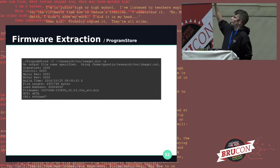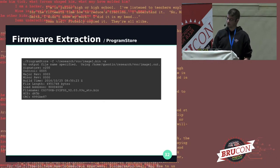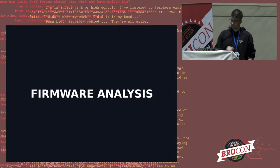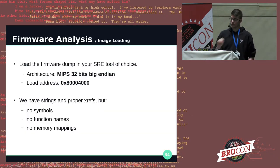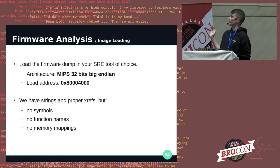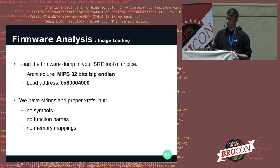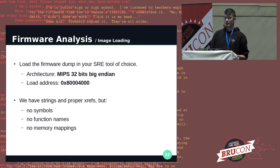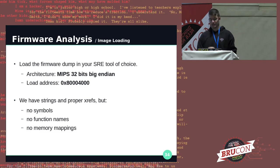You see the different header fields being printed out, and the actual binary is written to an output file. Now that we have our firmware image, it's time to analyze it. We can load it in Ghidra as a MIPS 32 big-endian binary with the load address we just read from the program store header. However, there is a big problem — we don't have symbols, no function names, no memory mappings. It's a huge block of code that makes almost no sense.